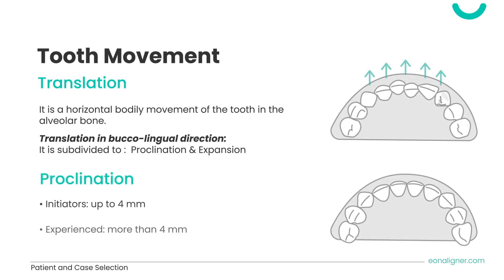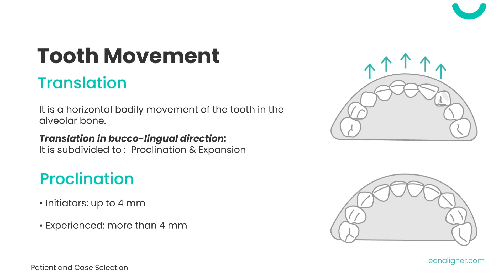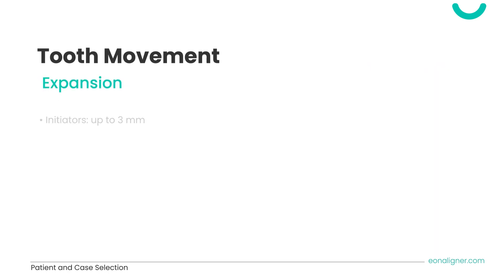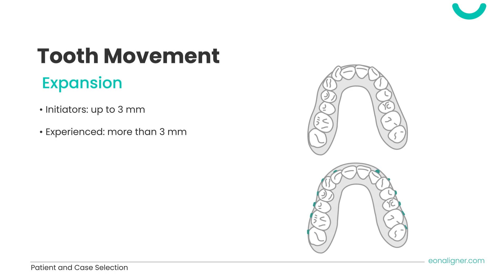Translation is the horizontal bodily movement of the tooth in the alveolar bone, and exists in buccolingual or mesiodistal directions. In the buccolingual direction, this includes proclination of anterior teeth and expansion of posterior teeth. Initiators can achieve up to 4 millimeters of proclination; experienced users can do more. For expansion of posterior teeth, initiators may do up to 3 millimeters. Attachments are used for better grip and force application.